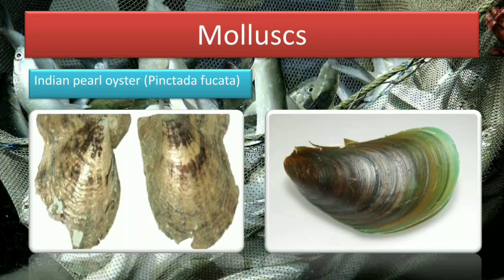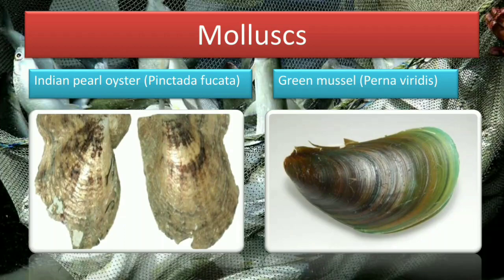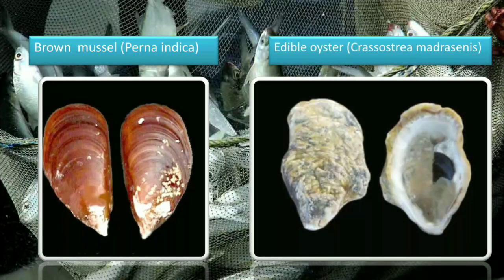Next is mollusks. First is Indian pearl oyster — Pinctada fucata — from which we get pearls. Its culture is practiced successfully in India and is very beneficial and in high demand. Next is green mussel — Perna viridis — and brown mussel — Perna indica. Then edible oyster, which is used for eating purposes.